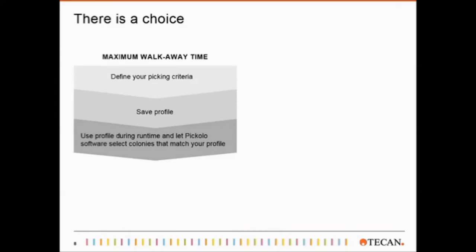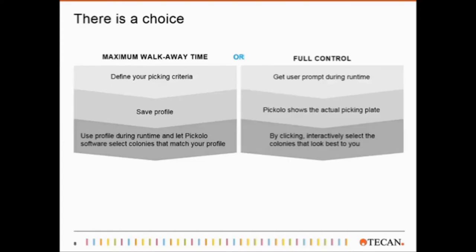Either you define your colonies and save the criteria in a picking profile, which is then called up automatically during the picking process, and the robot chooses and picks the colonies accordingly, which gives maximum walkaway time. Or you stay in control - the robot shows a picture of your plate during the run, and you can select each single colony that should be picked. This is almost like picking by hand, just with a system that does the tracing. But this way you have a chance to really pick the colonies that look best to you. So either pick colonies fully automated or pick the colonies that you like best.